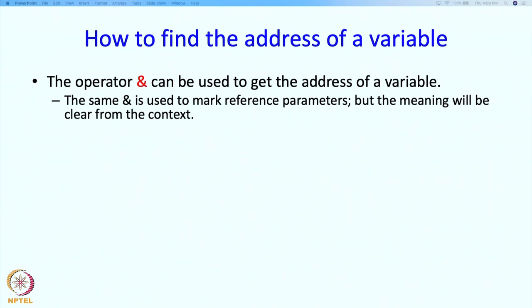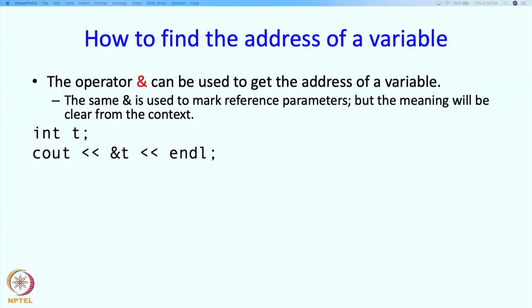The same & is used to mark reference parameters, but which one we are thinking of will become clear from the context. We also have && to denote the conjunction of two conditions. In this context we are using a single & — do not confuse it with && or with the & used to mark reference parameters. Here is a statement which creates a variable t of type int. If I write cout << &t, this is going to print out the address of t, not what is stored in t.